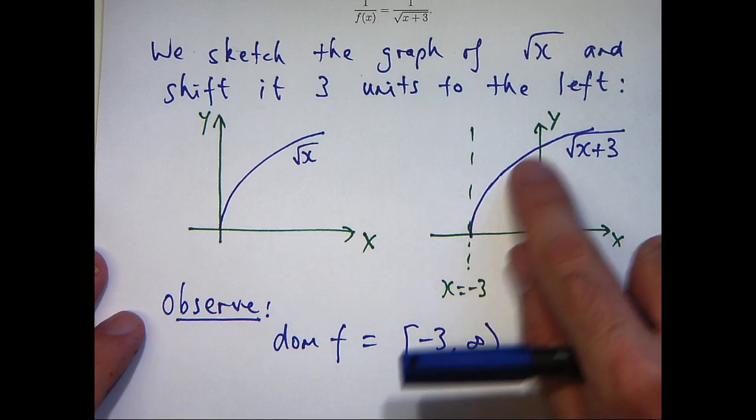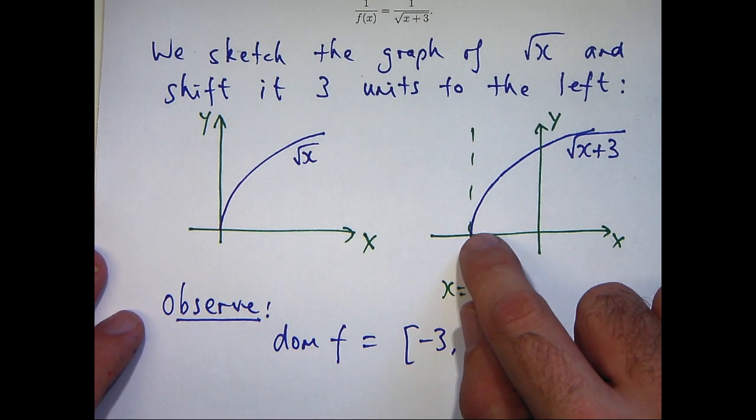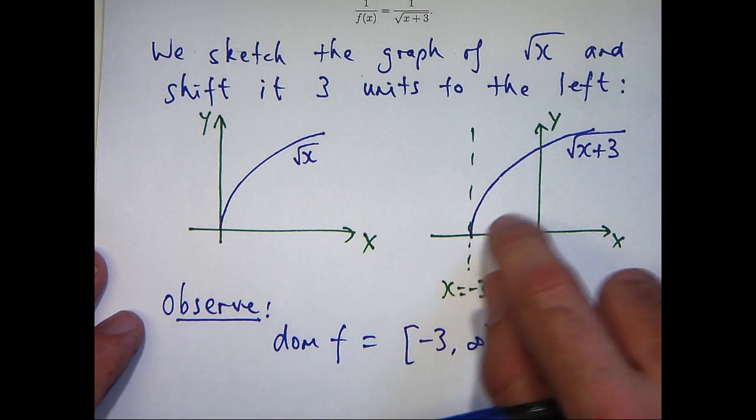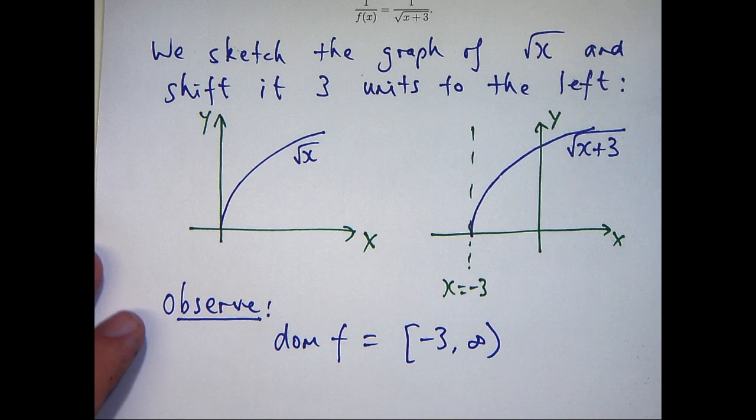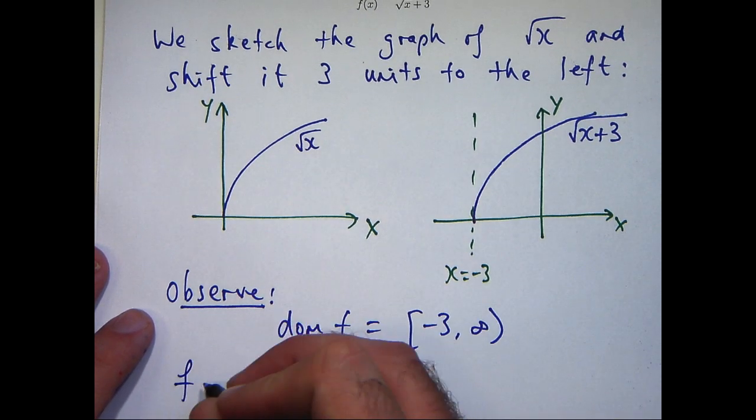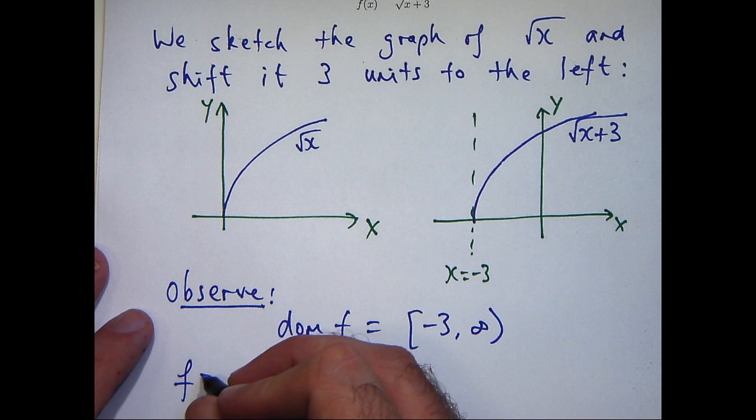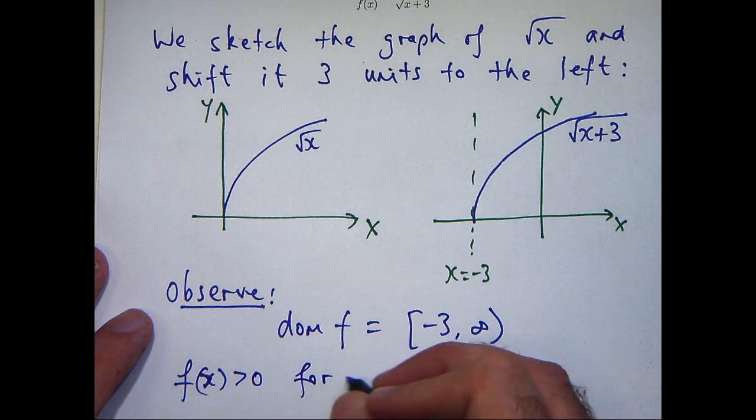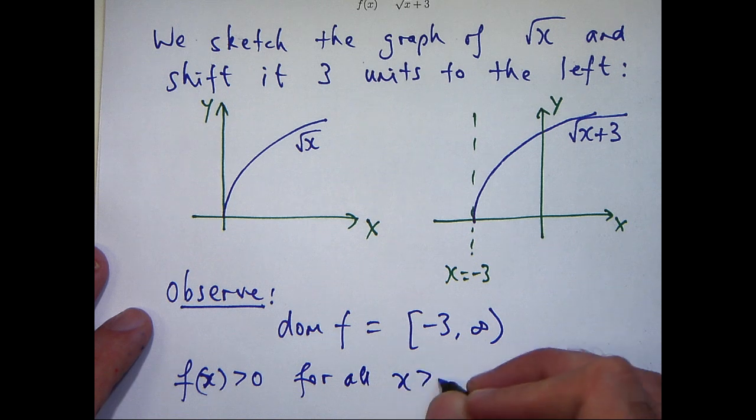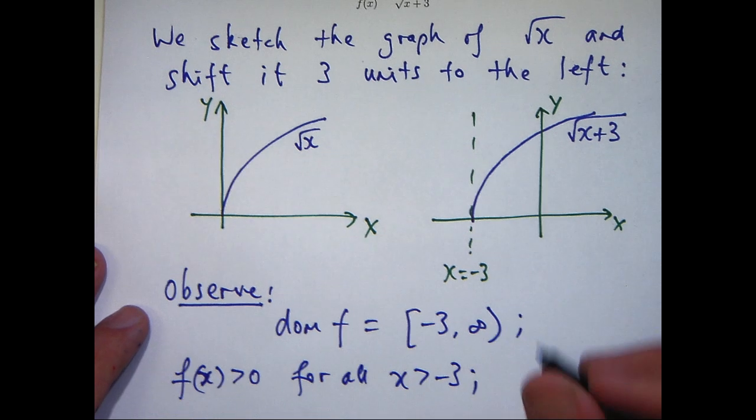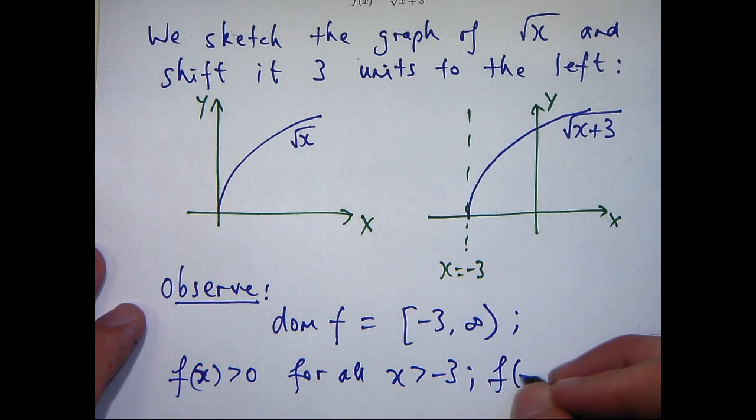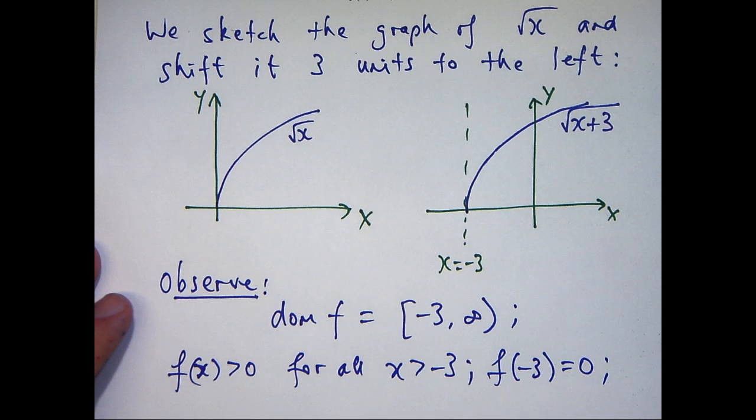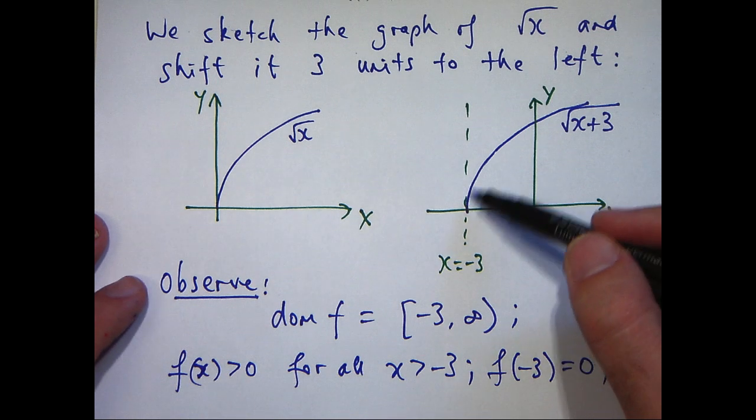Okay, what else do we notice about the graph? Well, you can see the graph touches the x-axis here, and it lies above the x-axis elsewhere. So this means that f of x is positive for all x strictly greater than minus 3, and f of minus 3 equals 0.